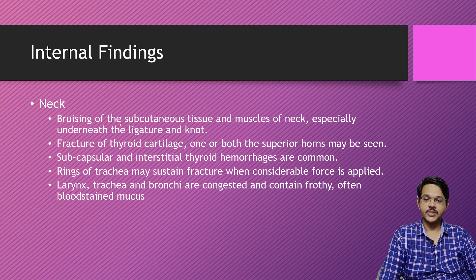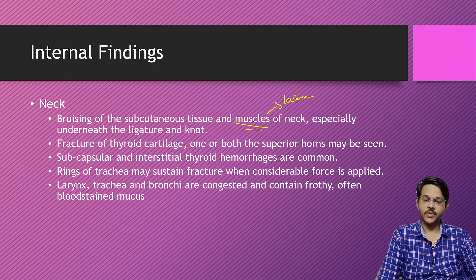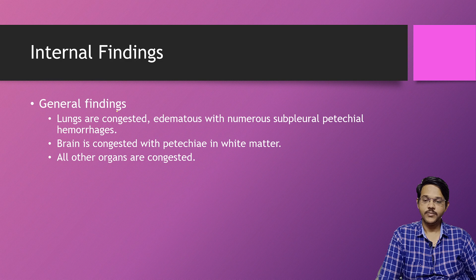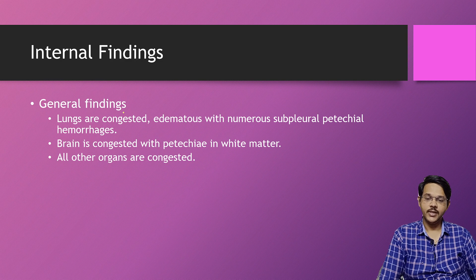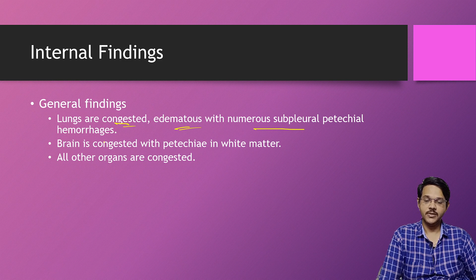Internal findings after neck dissection: under the ligature mark there is bruising of superficial tissue and muscles of the neck. Sometimes the muscles may be lacerated or torn, especially near the ligature. Fracture of the thyroid cartilage may be present; one or both superior horns may also be fractured. Subcapsular and interstitial thyroid hemorrhages are commonly seen. Rings of the trachea may sustain fracture when considerable force is applied. The larynx, trachea, and bronchi are congested and contain frothy, often blood-stained mucus. Lungs are congested with numerous subpleural petechial hemorrhages. The brain is congested with petechiae in the white matter.